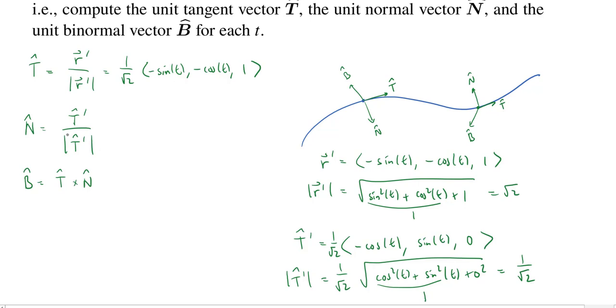Of course, we're dividing by the magnitude. So we're dividing by one over the square root of two, which is the same as multiplying by the square root of two. So when I do that, actually, I'll get the square root of two times one over the square root of two. Hey, that's fantastic. Those are going to cancel. And I'll just get negative cosine of t, sine of t comma zero.